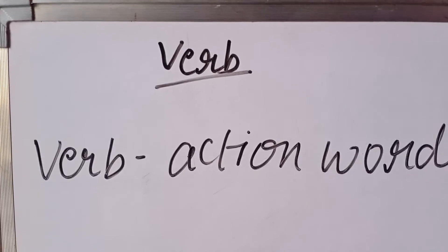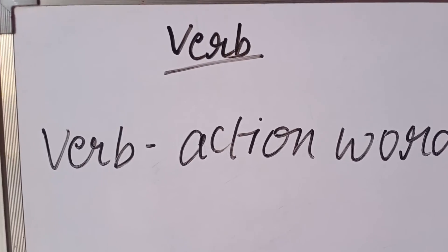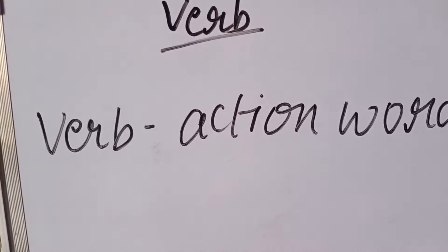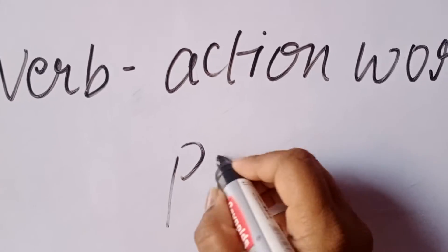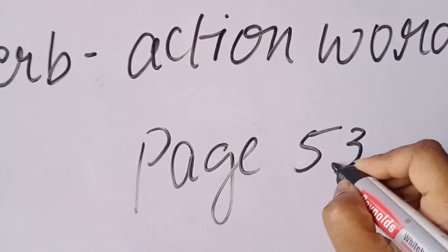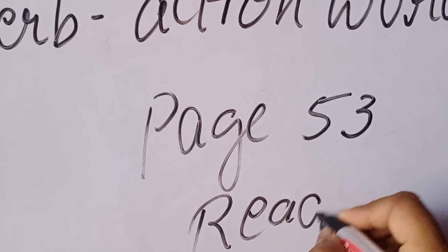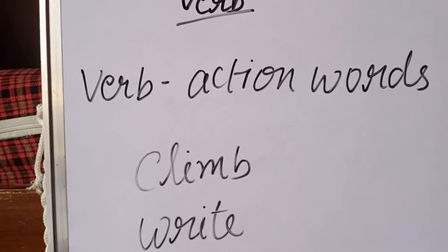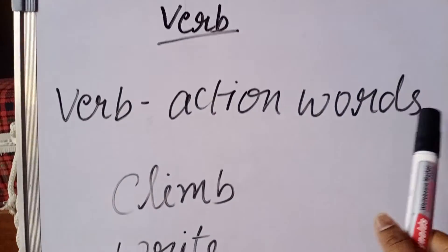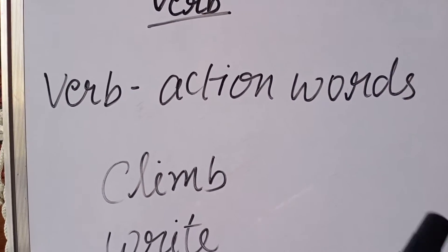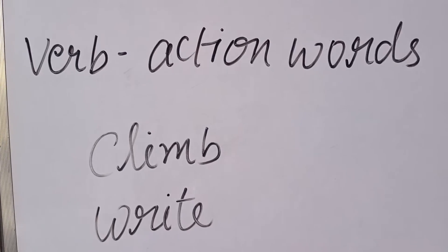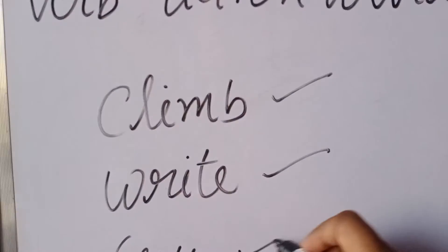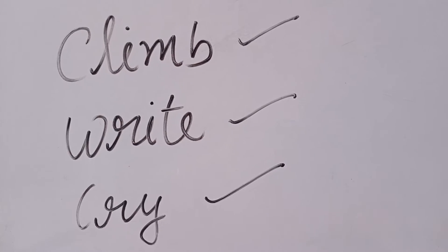Good morning students. Today's topic is about verbs. Verb means action words. This topic is on page number 53 in your English reader book. I want everybody to open page number 53. As I told you, verbs are action words — words that tell us what the subject is doing. Words like climb, write, cry — all these words are action words.